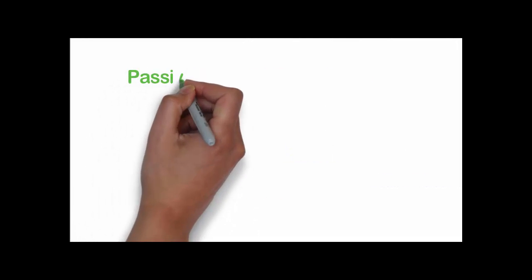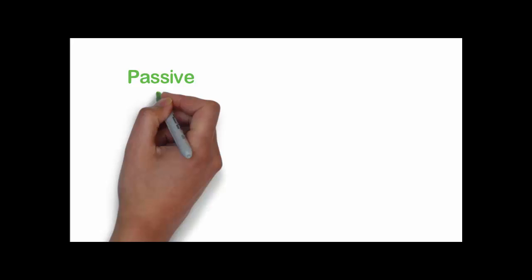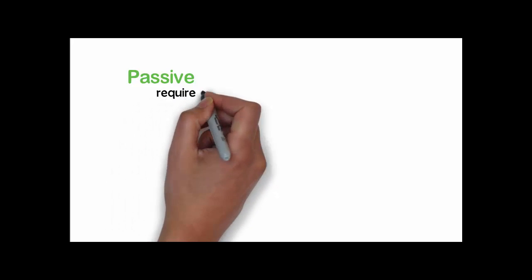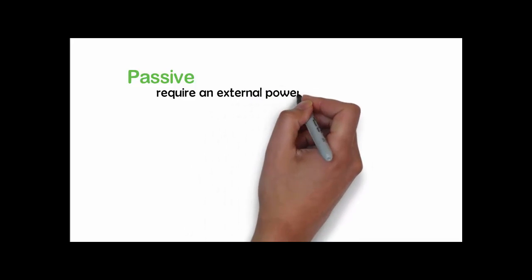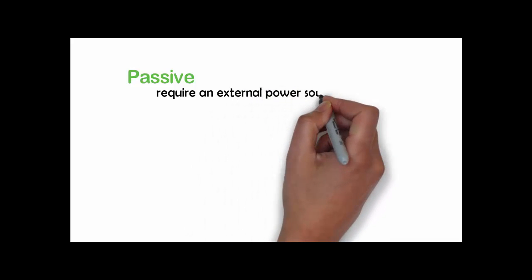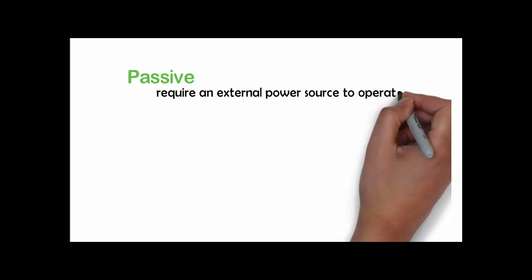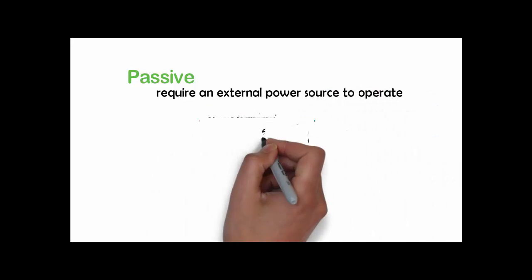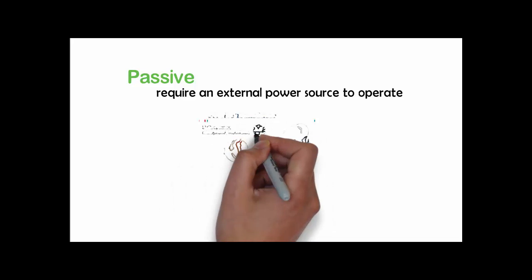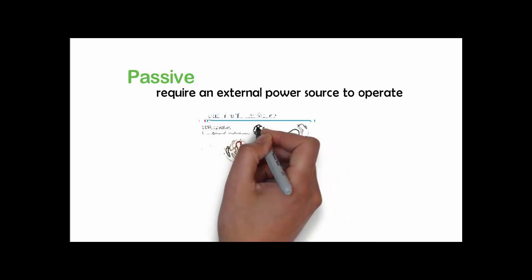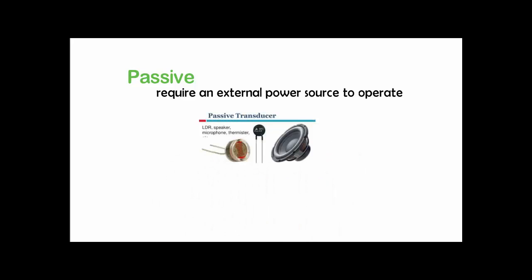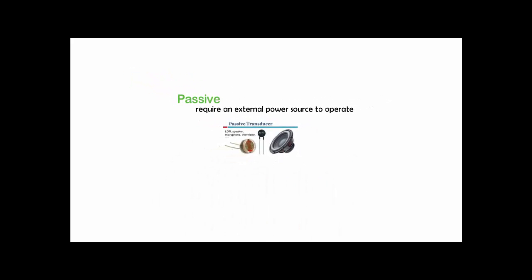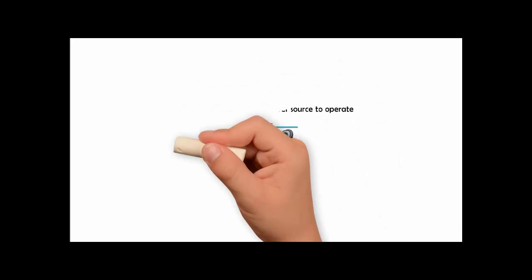Let's start with passive transducers. A passive transducer requires an external power source to operate — this is called an excitation signal. The signal is modulated by the sensor to produce an output signal. For example, a thermistor does not generate any electrical signal by itself, but by passing an electric current through it, its resistance can be measured by detecting variation in the current or voltage across the thermistor. Examples of passive transducers include LDR, speakers, etc.